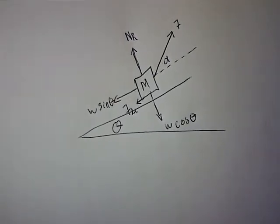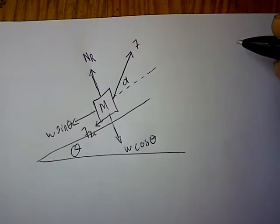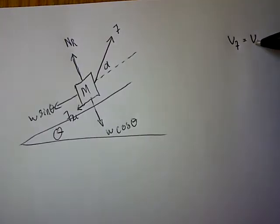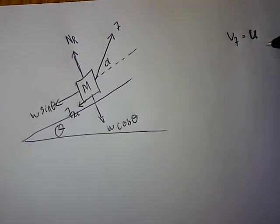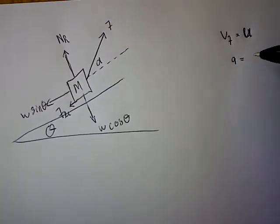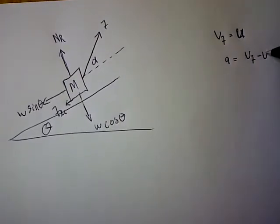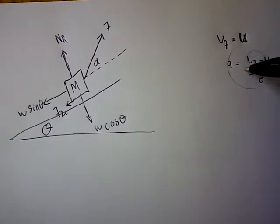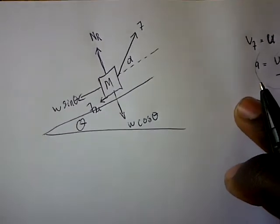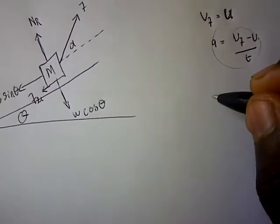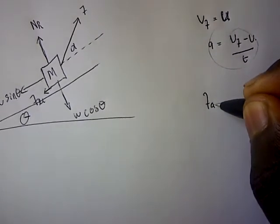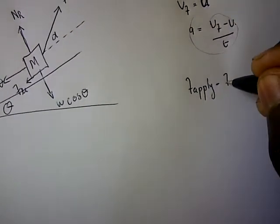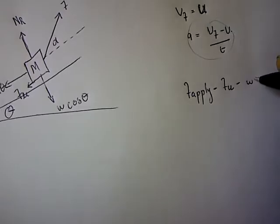If we are moving at constant acceleration, that means our acceleration a equals zero. If we have constant velocity, that means our final velocity equals our initial velocity. Since acceleration equals (final velocity minus initial velocity) over time, this gives us zero.